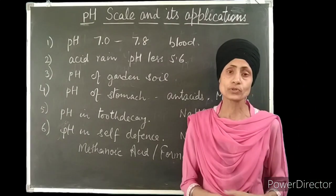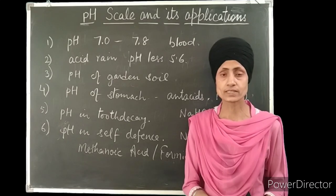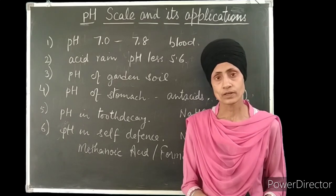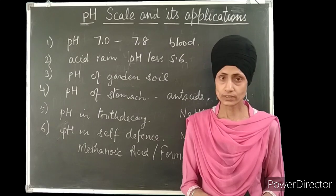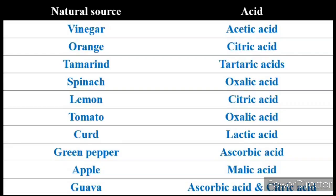Now I would like to tell you few naturally occurring acids present in our food items and other plants. Vinegar contains acetic acid. Orange has citric acid. Tamarind has tartaric acid. Spinach has oxalic acid. Lemon contains citric acid. Tomato has oxalic acid. Curd has lactic acid. Green pepper has ascorbic acid. Apple has malic acid. And guava contains a mixture of ascorbic acid and citric acid.